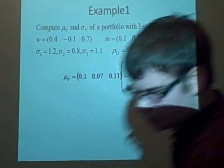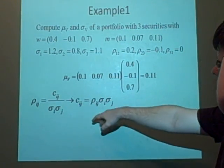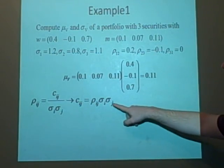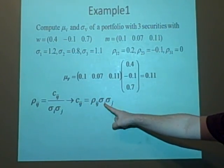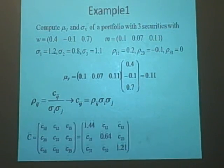Now we want to work out the covariance matrix. We've rearranged this so we can get, for each of these Cij, we've got our correlation coefficient and the standard deviations, so now we can calculate the proper matrix.